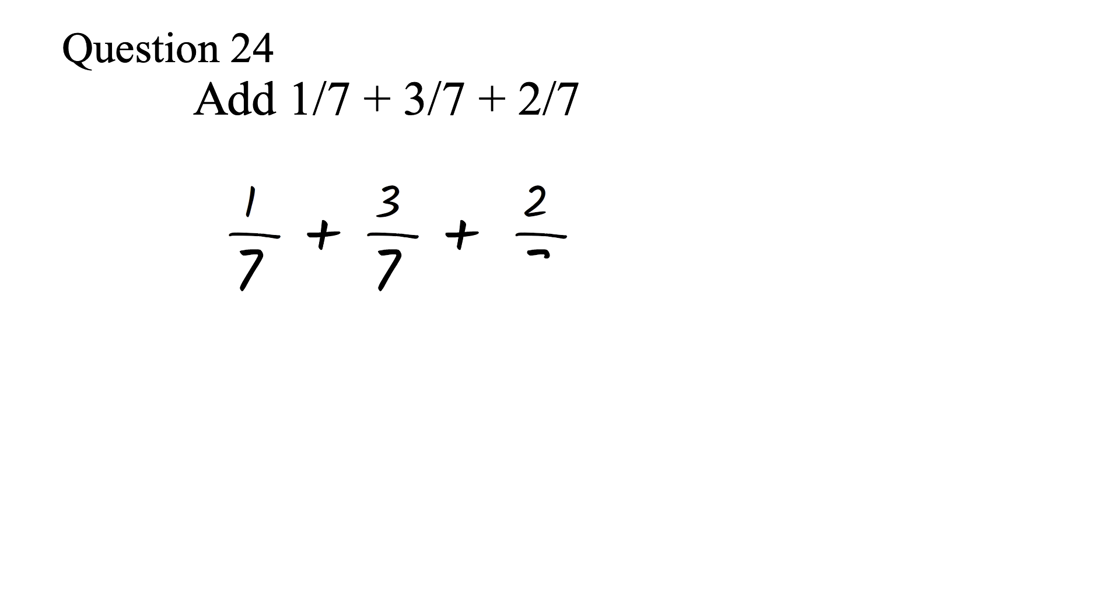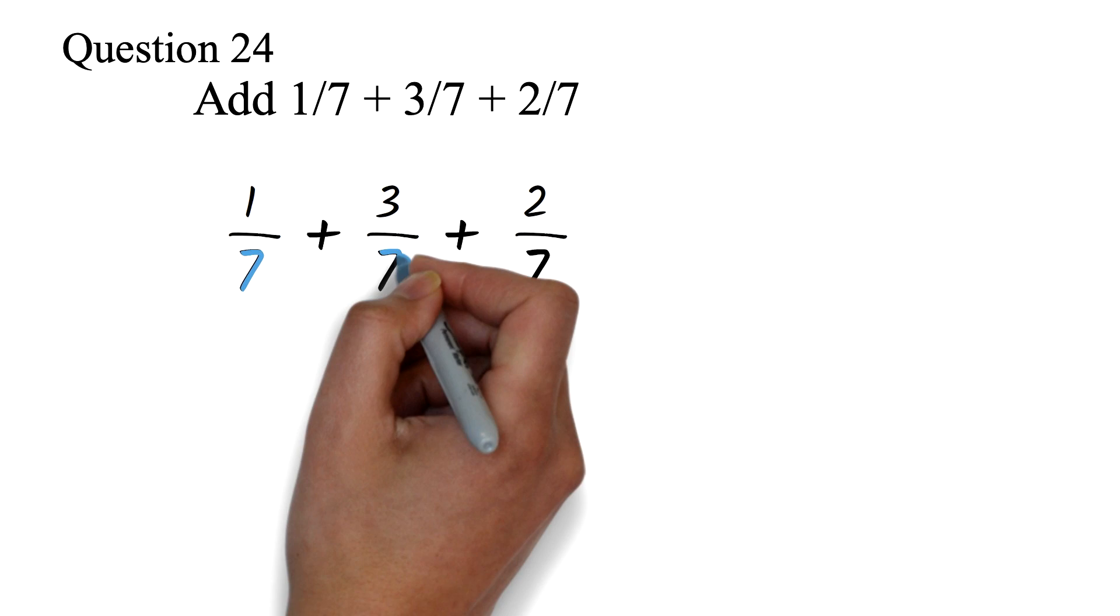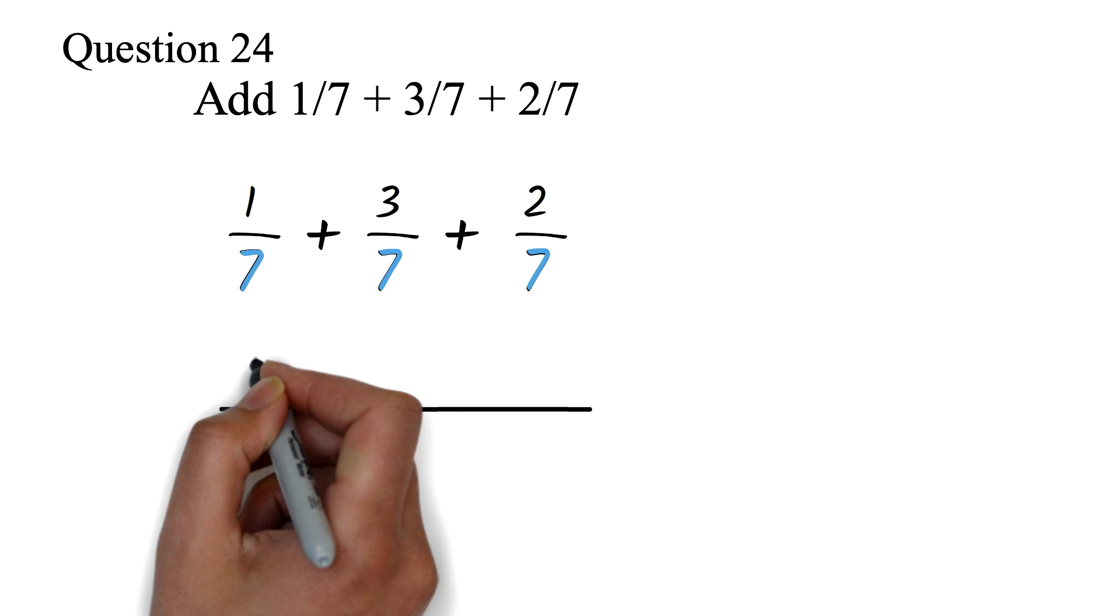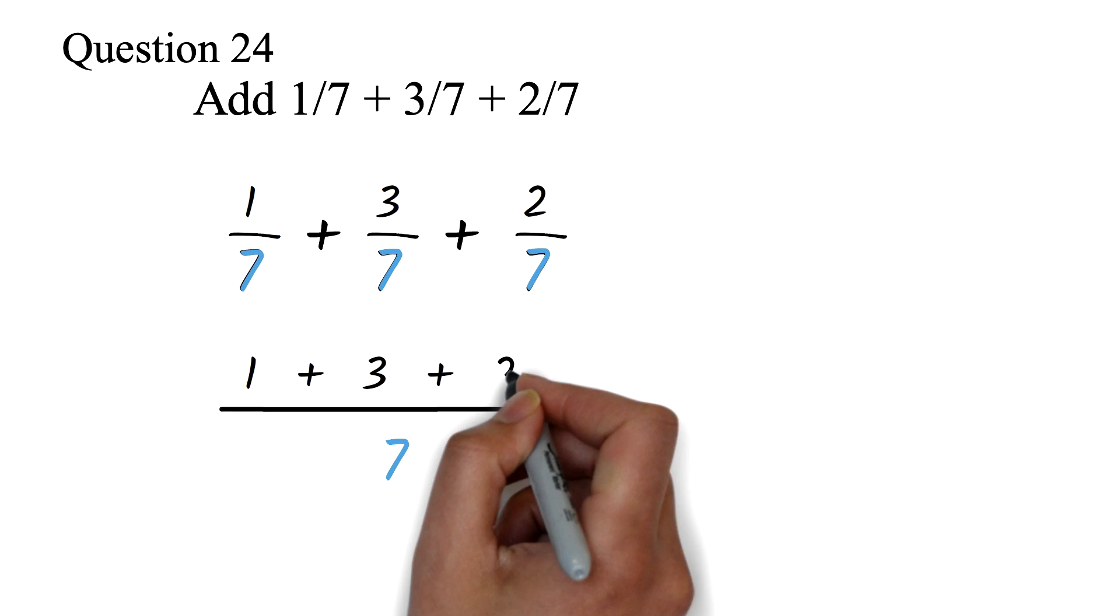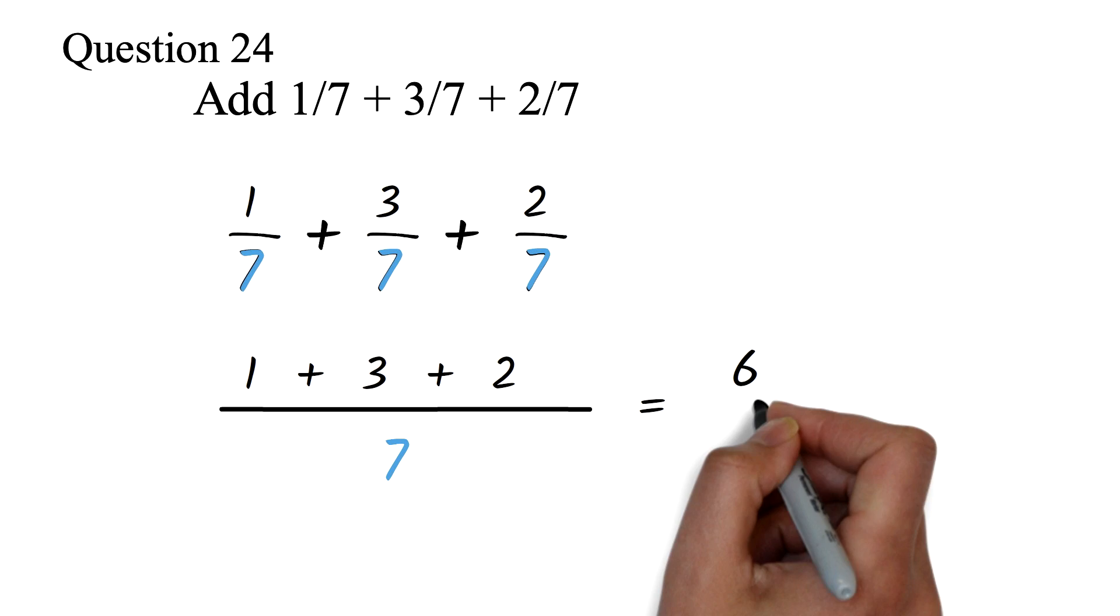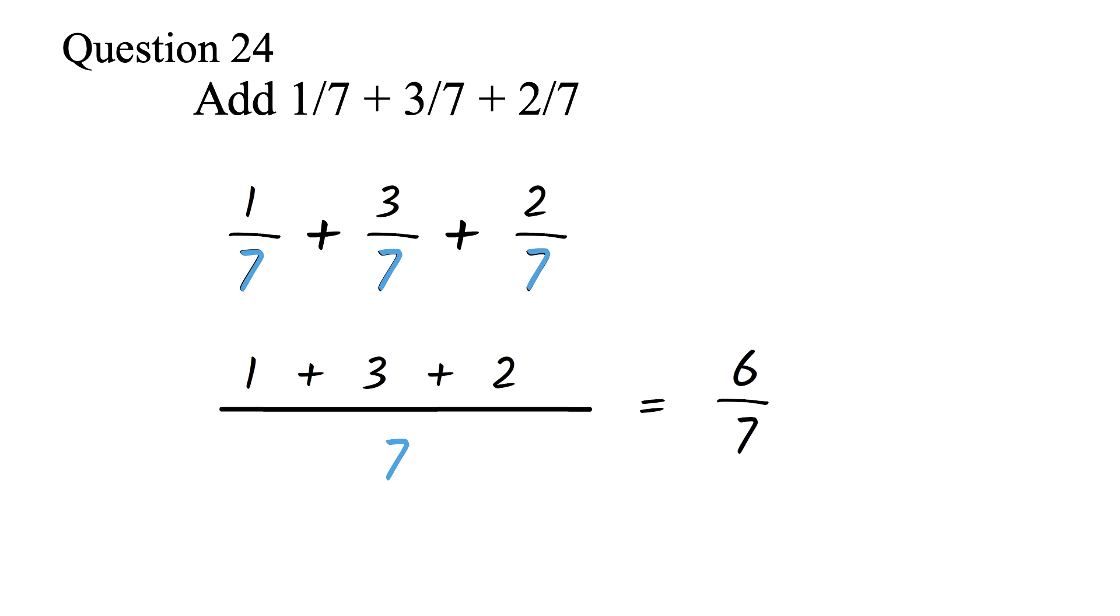This is really the easiest form of fraction questions. Here, all the fractions have the same denominator, 7. You will put that as the denominator of the answer. Since they have a common denominator, you'll just add the numerators. So, we have 1 plus 3 plus 2. This is 6. So our final answer is 6 over 7. Pretty straightforward. Let's take our next question.